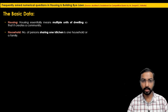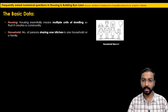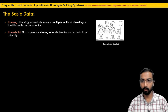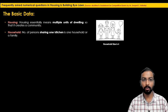The next important definition is household. The number of persons sharing one kitchen in one family is called one household. For example, if there are four family members sharing one kitchen, the household size is four.